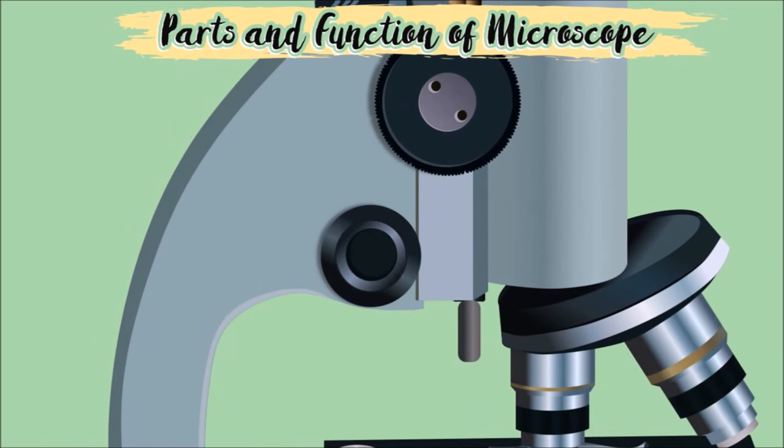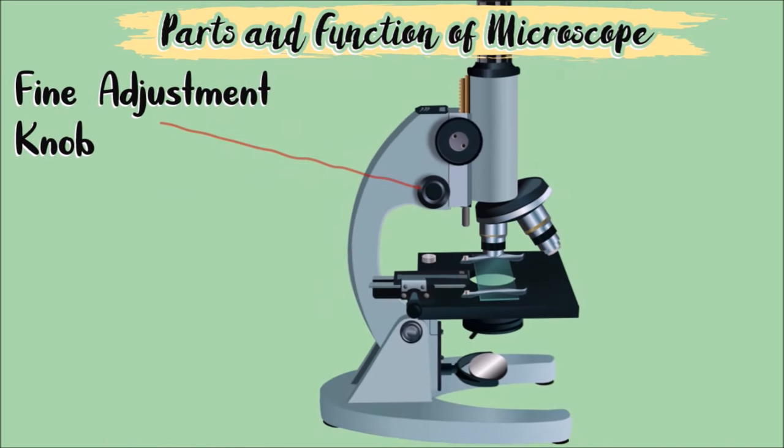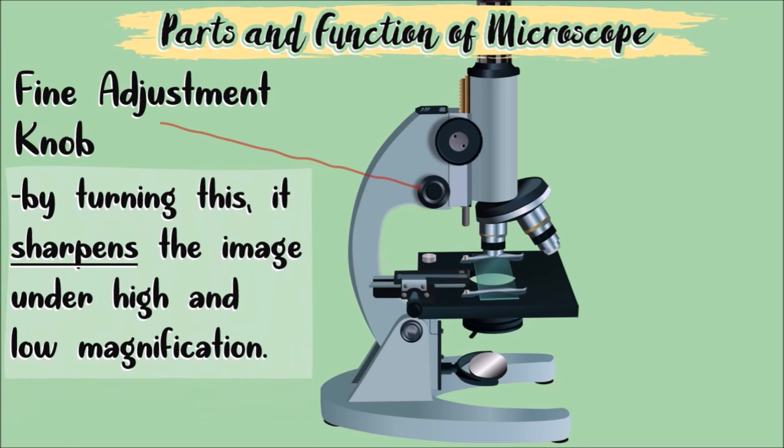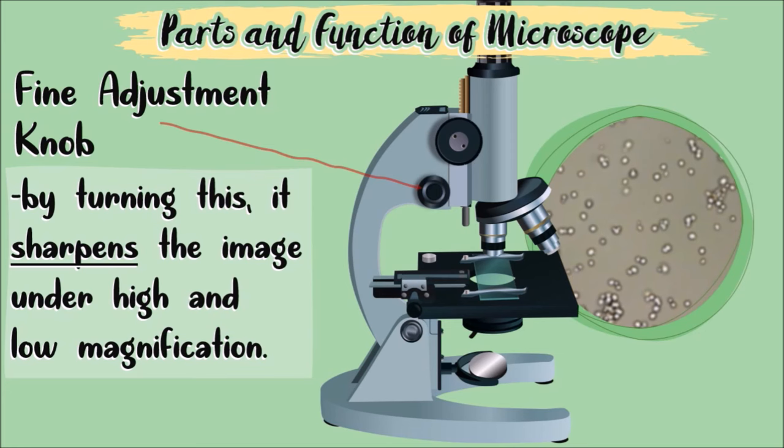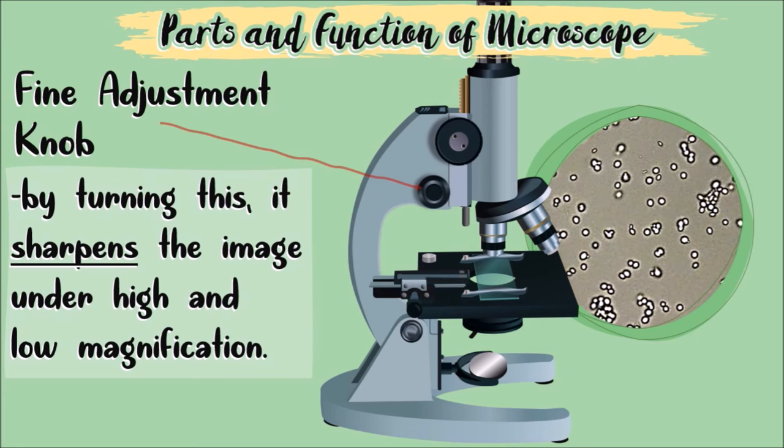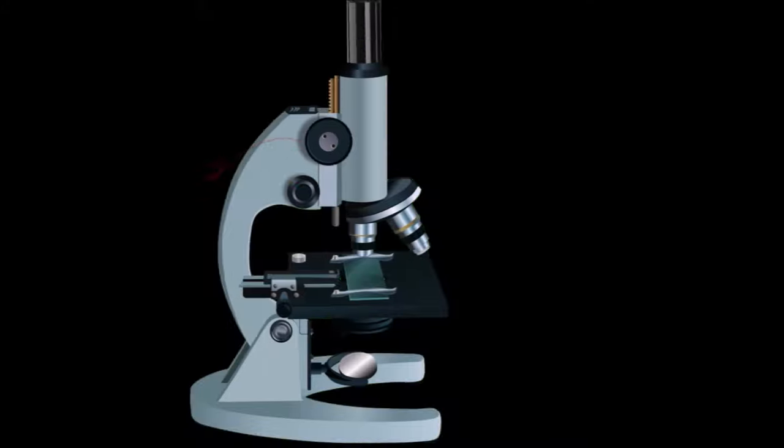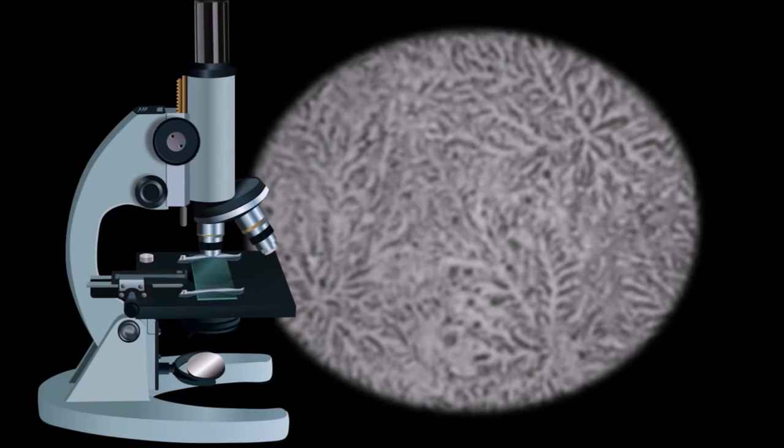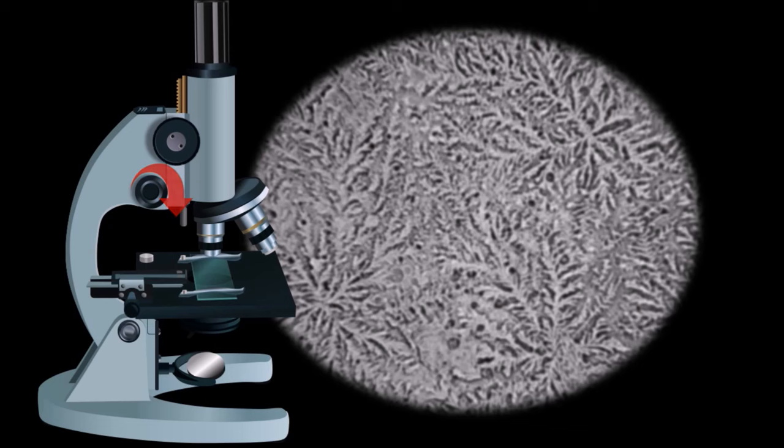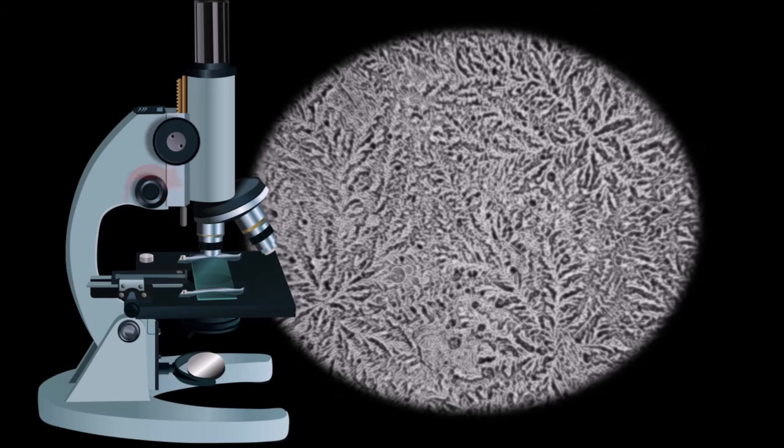This small knob right here is also important to make the image clear. This is the fine adjustment knob. By turning this, it sharpens the image under high and low magnification. Therefore, if you see that the image is blurred, just turn the fine adjustment knob until you find the perfect image.